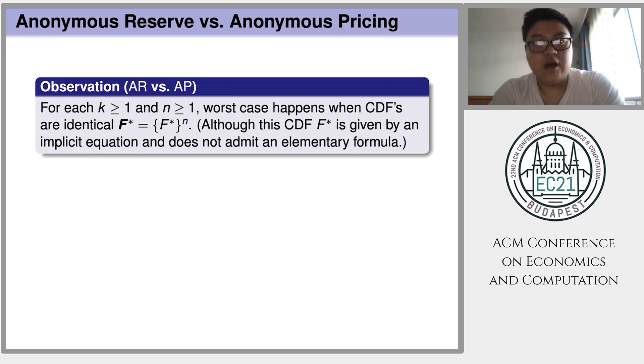For the anonymous reserve versus anonymous pricing problem, the key observation is that we prove that for each fixed k, the number of copies, and for any fixed n, the number of buyers, the worst case of AR versus AP problem happens when the value distributions are indeed identical.